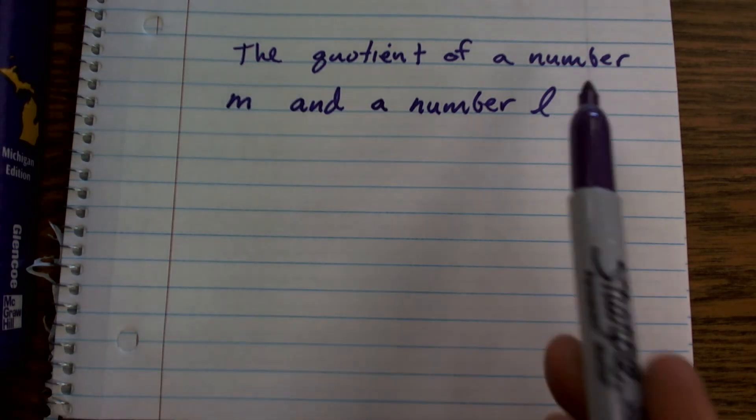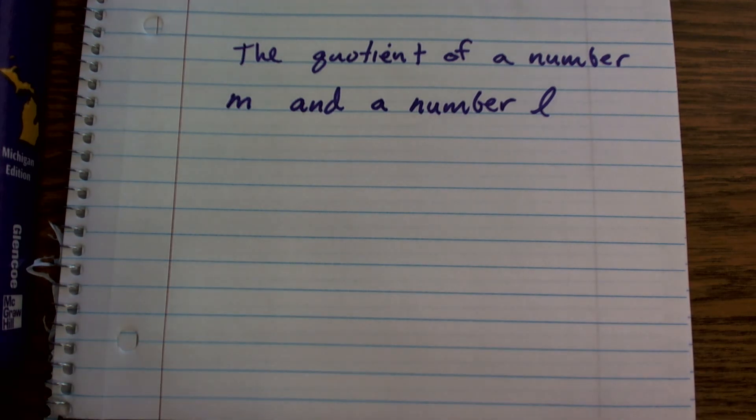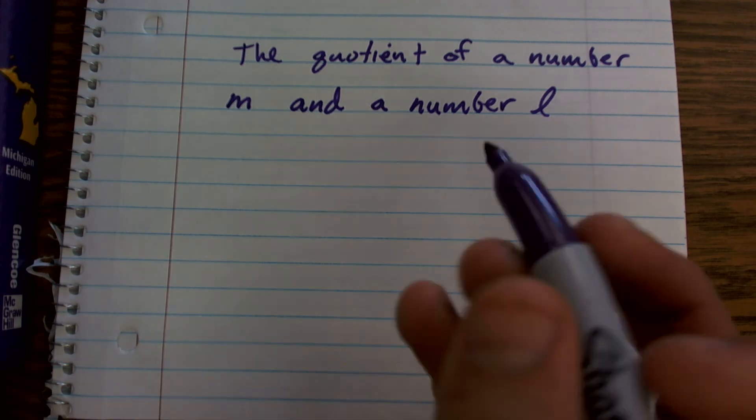So the quotient of a number, remember, we've already dealt with product, which is multiplication, sum, which is addition, and difference, which is subtraction. So the quotient, we know there's going to be division.